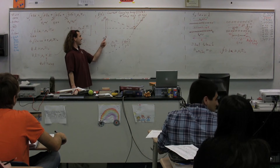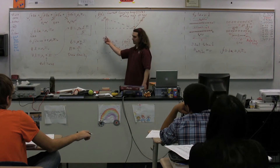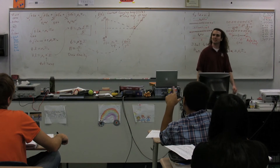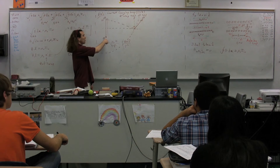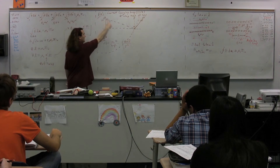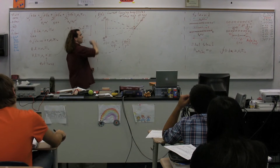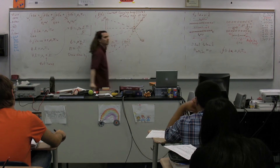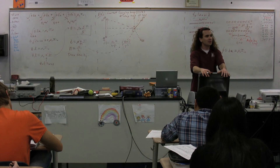Now consider the current element dI at the bottom of the loop. Using your right hand, figure out the direction of dB caused by this dI. The current here is going into the board, so stick your thumb in that direction and curl your fingers — it creates a circle around that point. At point P, the dB from the bottom element is 180 degrees from the dB due to the top element, so all the y-direction components cancel out.